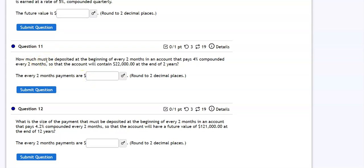All right, so question 11. How much must be deposited at the beginning of every two months in an account that pays 4% compounded every two months so that the account will contain $22,000 at the end of two years?